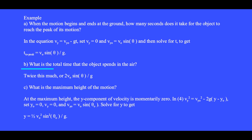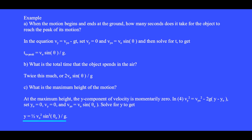Question b: what is the total time that the object spends in the air? The answer is twice this much. Question c: what is the maximum height of the motion? In equation 4, we set y sub zero equals zero since we are launched from the ground, set v sub y equals zero, and the y component of the initial velocity v sub y zero equals v zero sine theta zero. Solving for y, we get y equals one half v zero squared sine squared theta divided by g.